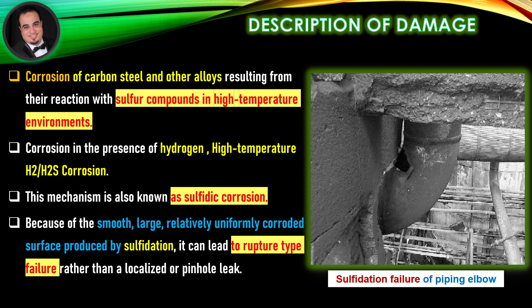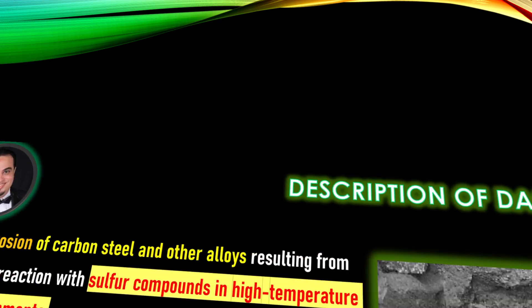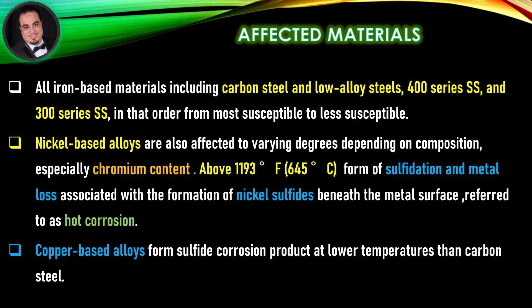As illustrated in the figure, sulfidation failure of a piping elbow. Affected materials include all iron-based materials including carbon steel and low-alloy steels, 400-series stainless steel, and 300-series stainless steel — in that order from most susceptible to less susceptible. Nickel-based alloys are also affected to varying degrees depending on composition.